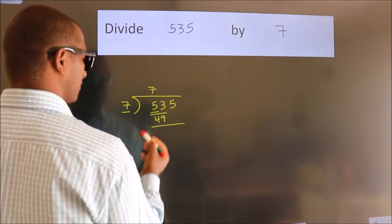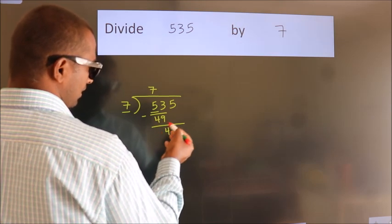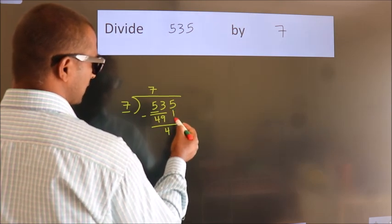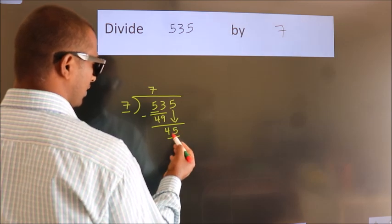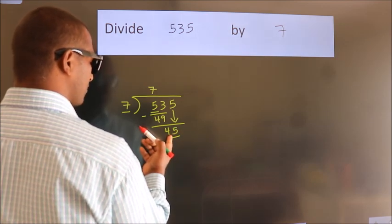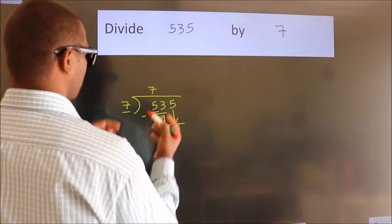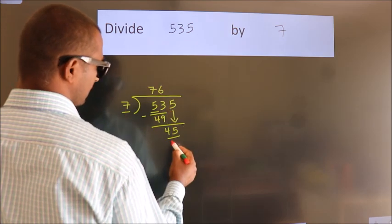Now we should subtract. We get 4. After this bring down the beside number. So 5 down, so 45. A number close to 45 in the 7 table is 7 times 6 is 42.